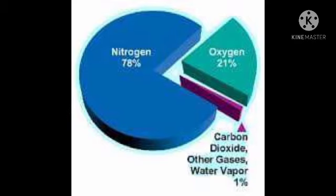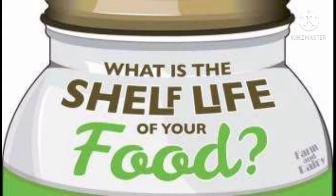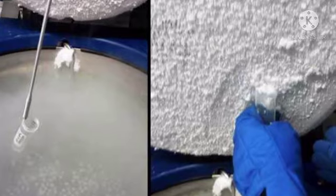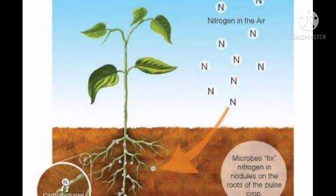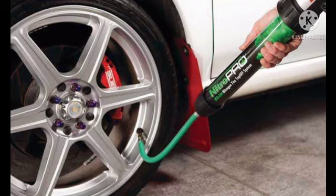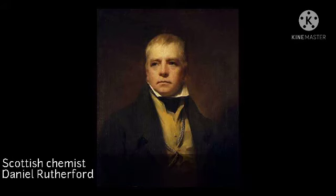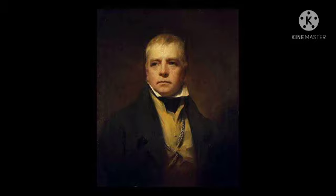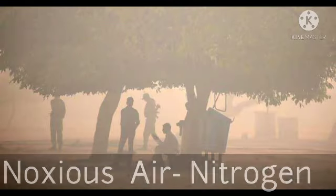Let's discuss one by one. Nitrogen: the amount of nitrogen present in air is about 78%. It is used to fill up food packages to extend their shelf life. Liquid nitrogen is used to store living cells. Plants need nitrogen for their growth. We can see root nodules containing nitrogen in some plants. Nowadays, people use nitrogen gas to fill the tyres of their vehicles. Some compounds of nitrogen are used as explosives also. In 1772, the Scottish chemist Daniel Rutherford reported noxious air, which now we call as nitrogen.